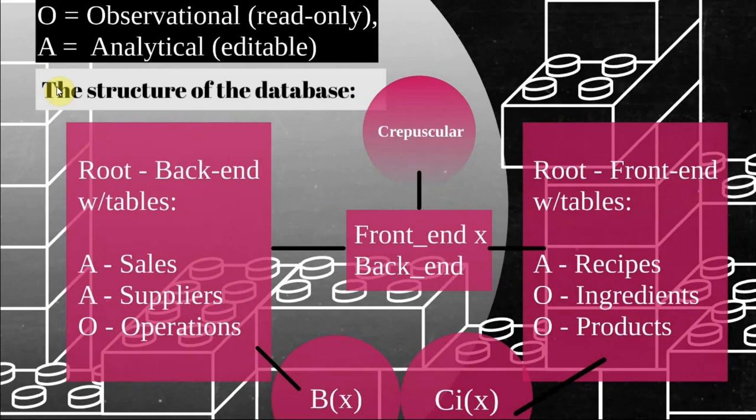Observational data is predefined by the business administrator. Analytical data is defined by supply and demand in the back end. In the front end, it is defined by the creativity of employees.